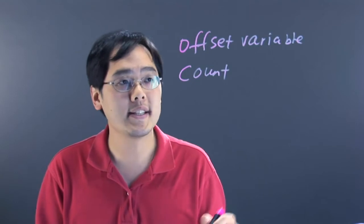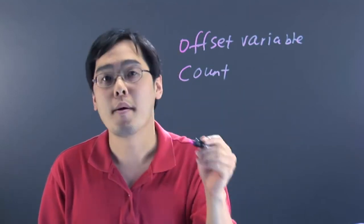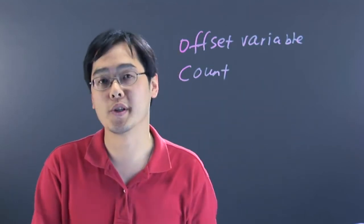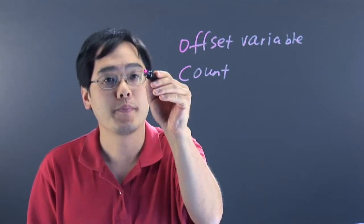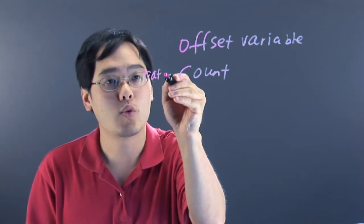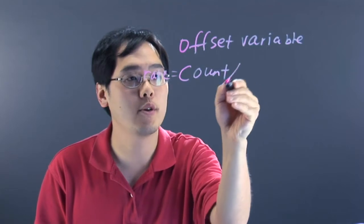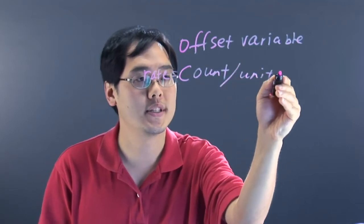Whereas a rate can be thought of as miles per hour, words per minute, things like that. A rate is equal to the count per unit time.